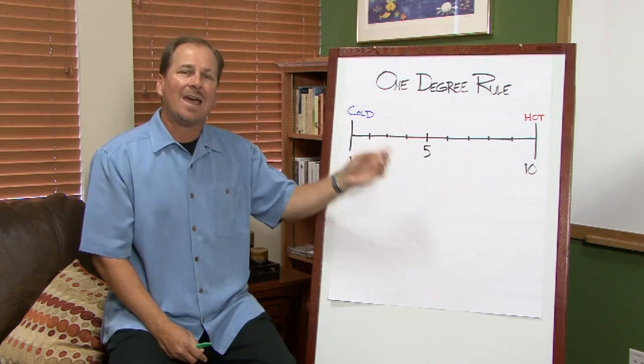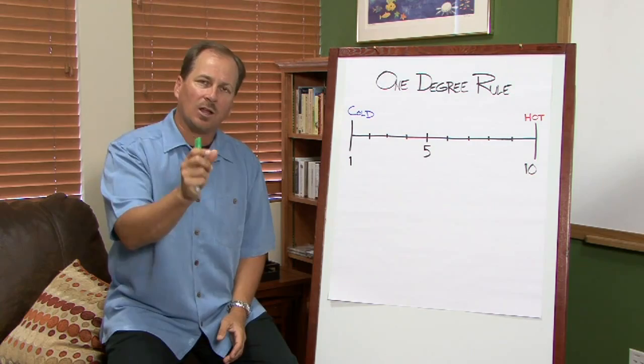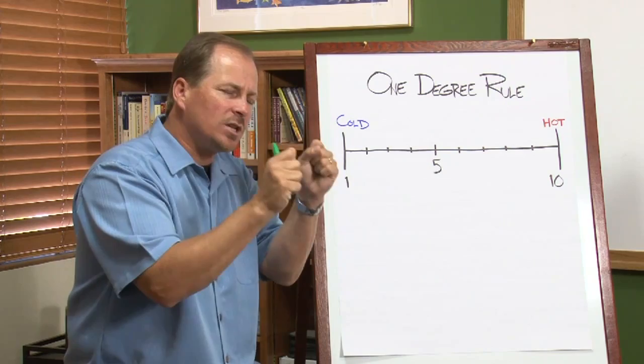The one degree rule, the simple idea is this: whatever your temperature is today, turn the dial, turn that knob up, let those flames grow higher, and say, God, increase my temperature and my heart and my love for those who are far from you one more degree.